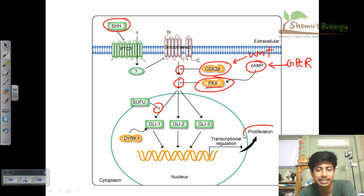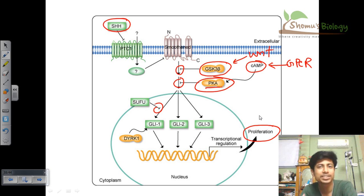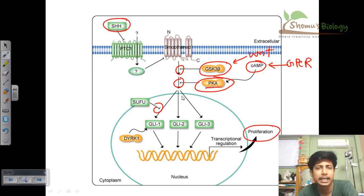The signaling from Smoothen through GLI, ultimately turning on genes that tell the cell to proliferate and differentiate into a specific functional cell type, is very important. All cells contain the same genes, yet nerve cells function differently than muscle cells, and GI cells function differently than lung cells — this is due to differential gene expression. Hedgehog pathway is one of the cell signaling processes that controls this, with its activity inhibited by GSK3-beta, PKA, and SUFU.